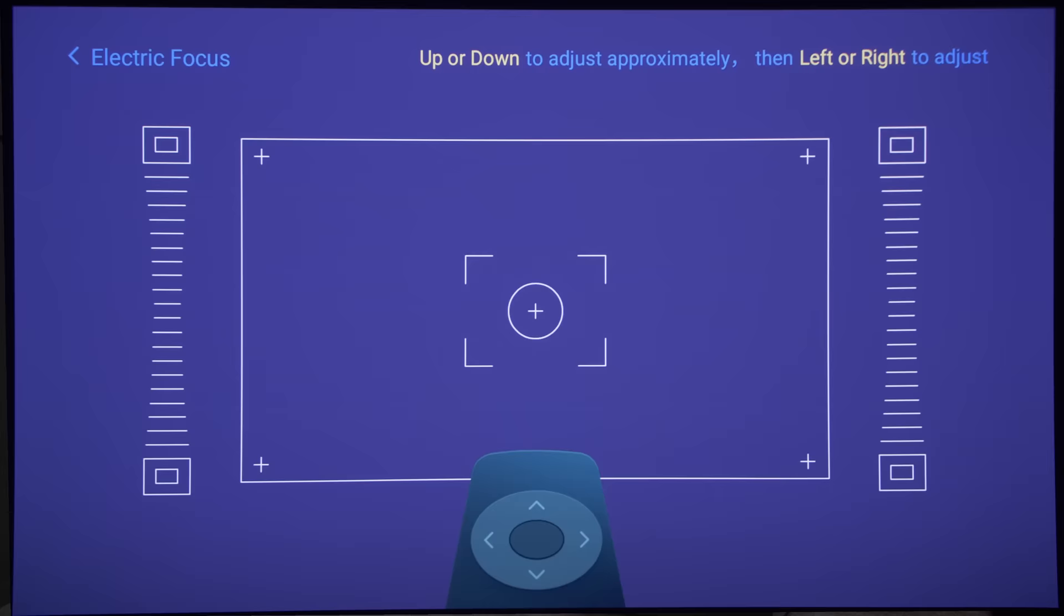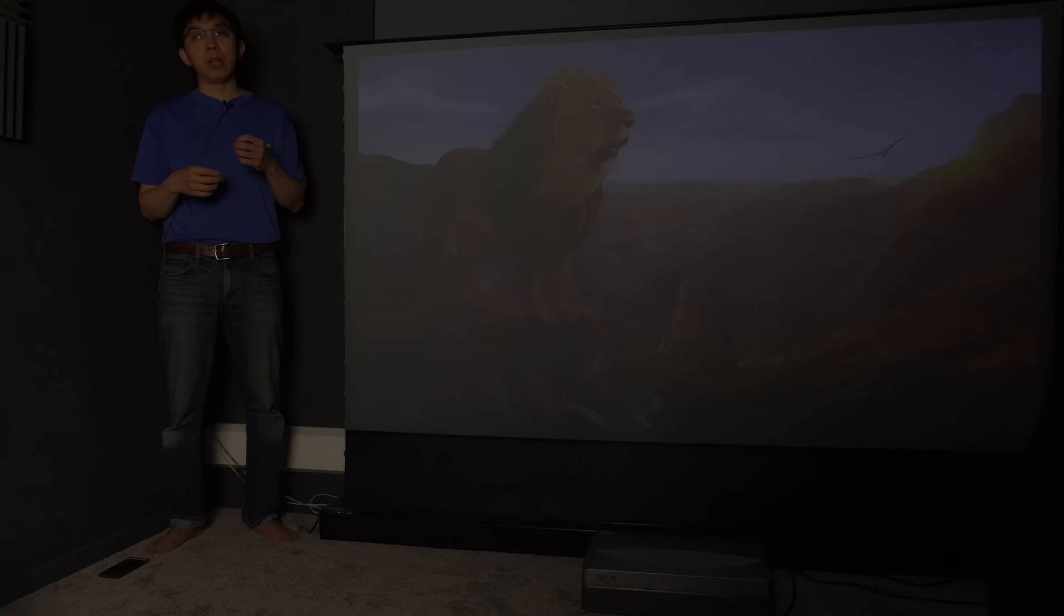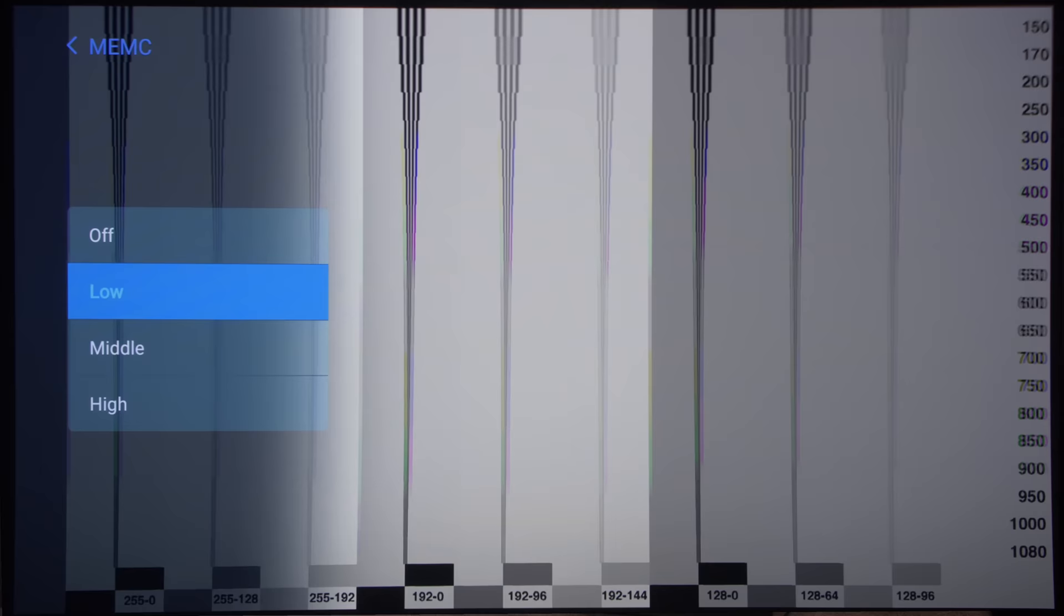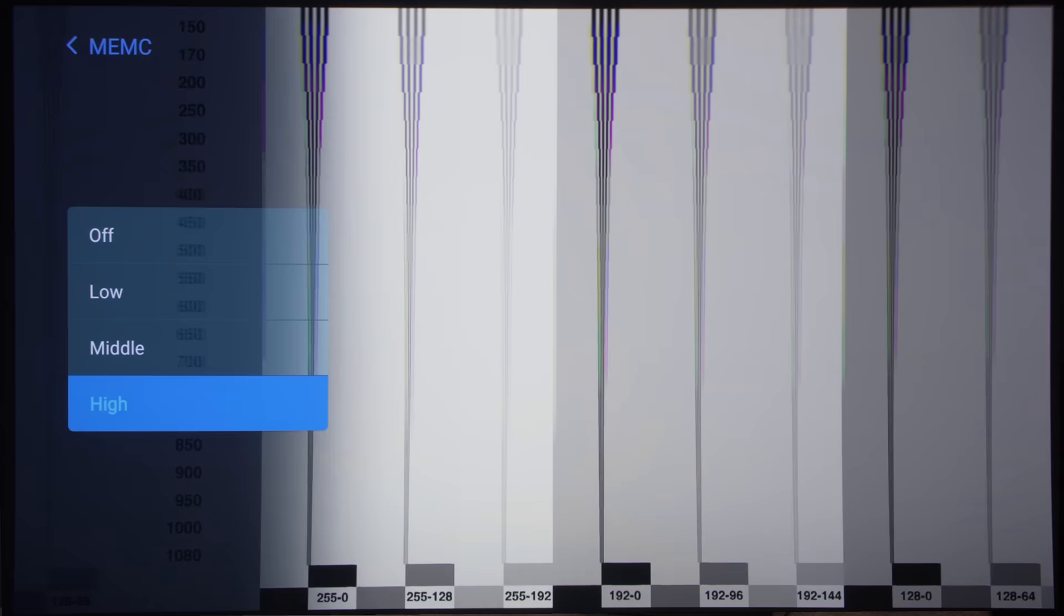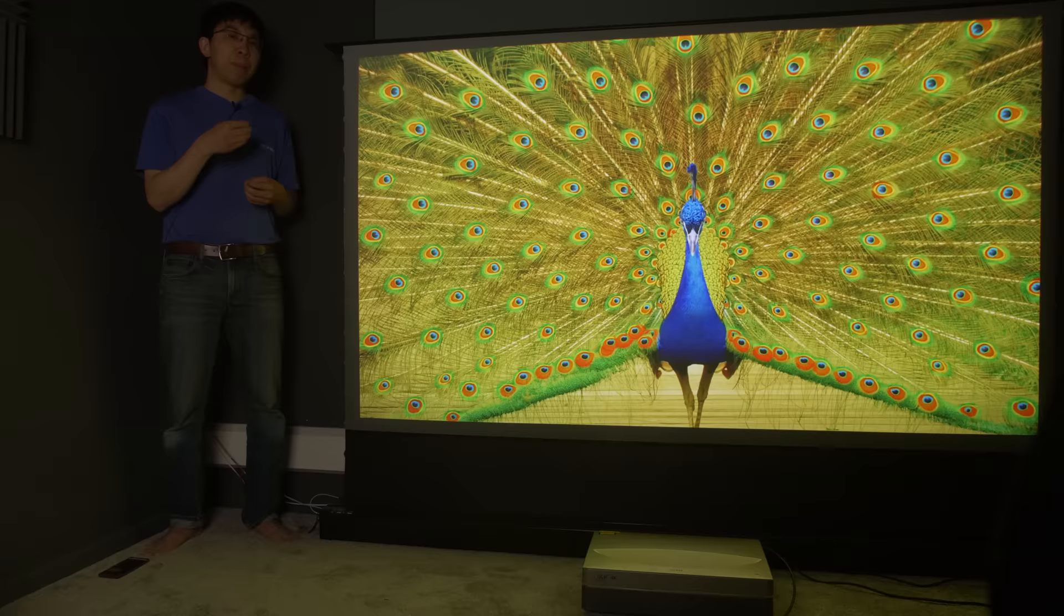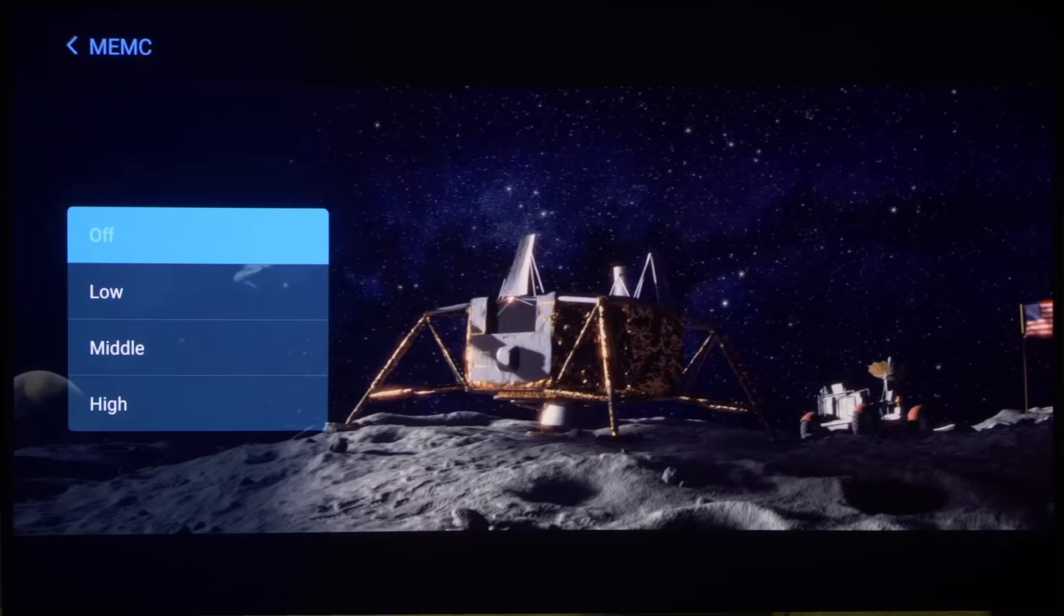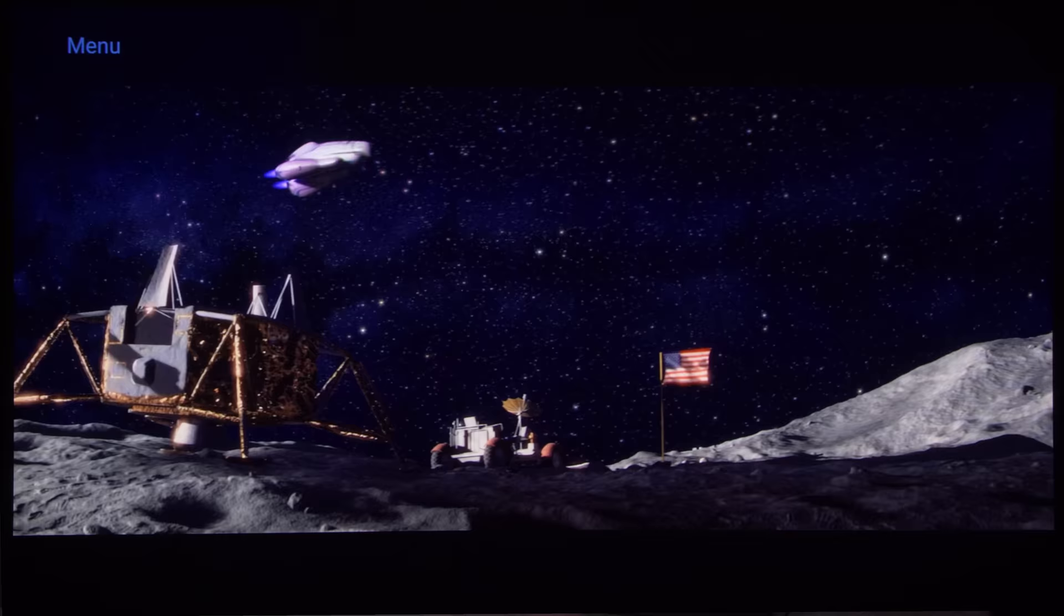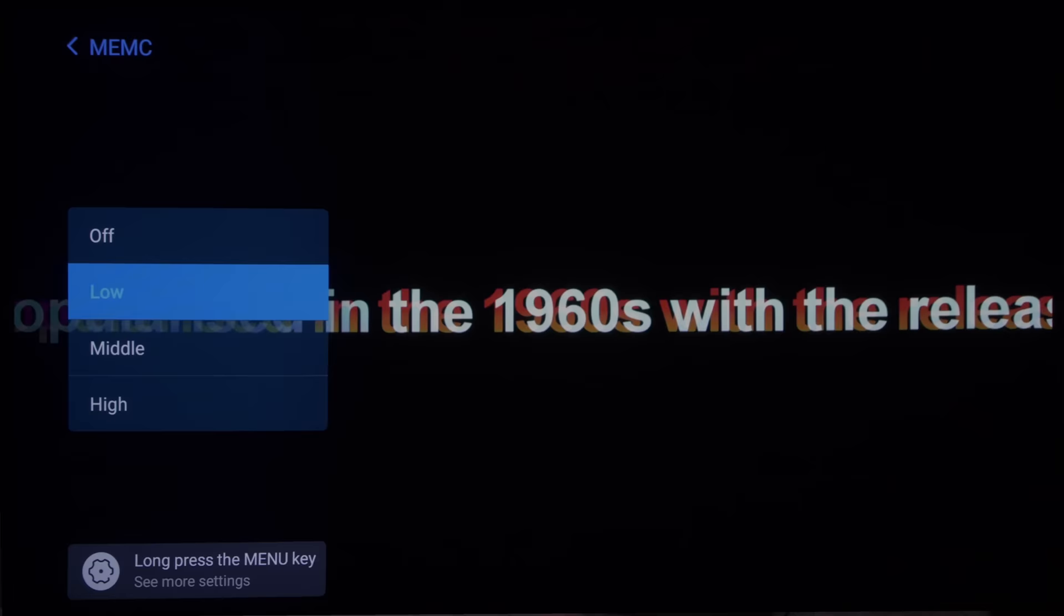Chic projectors, including the B5U, are unique in offering motion-compensated frame interpolation technology not currently found on other Chinese UST projectors, activated by the MEMC setting. Because the projector operates at 60Hz rather than 120Hz, it didn't increase motion resolution beyond the sample-and-hold baseline of 300 lines. Where MEMC could help was smoothing out the 3-2 pulldown judder in 24Hz films, though engaging MEMC also introduces some soap opera effect which may put off purists.